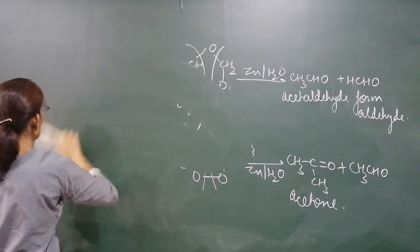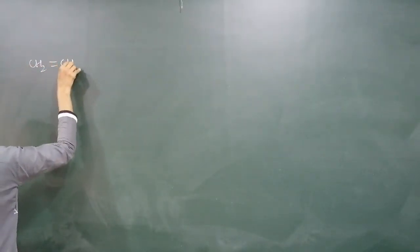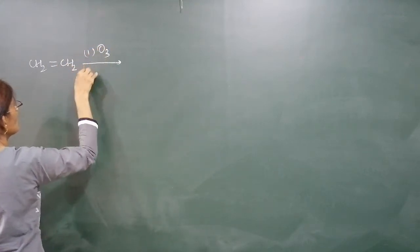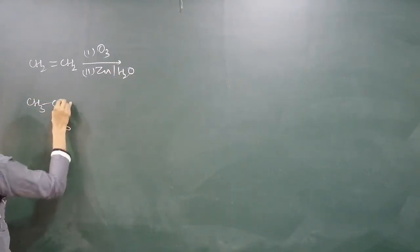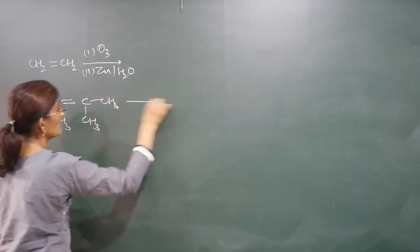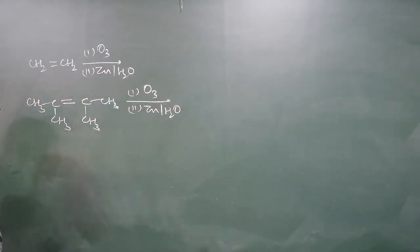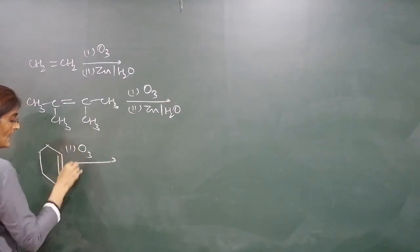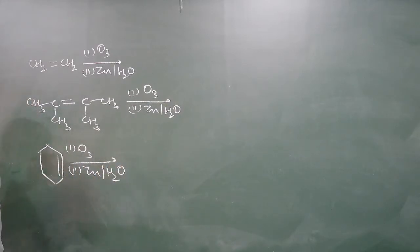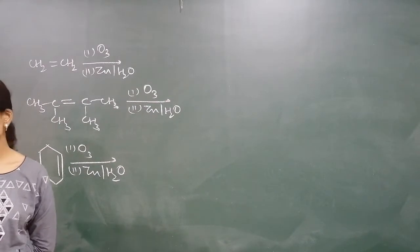Try to solve the ozonolysis of these alkenes: first treat with O3, then with zinc and water - explain the reactions and identify the products. Practice these ozonolysis reactions to understand how aldehydes and ketones are produced.